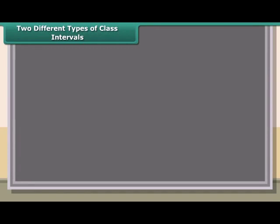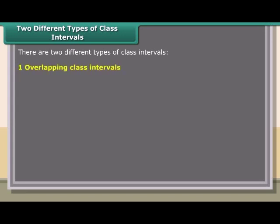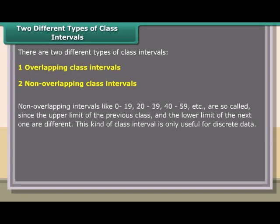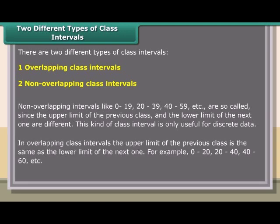There are two different types of class intervals: overlapping and non-overlapping class intervals. Non-overlapping intervals like 0–19, 20–39, 40–59, etc., are so called since the upper limit of the previous class and the lower limit of the next one are different. This kind is only useful for discrete data. In overlapping class intervals, the upper limit of the previous class is the same as the lower limit of the next one, for example 0–20, 40–60, etc.